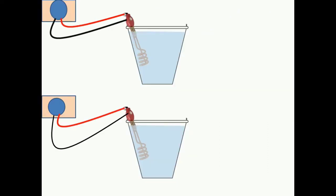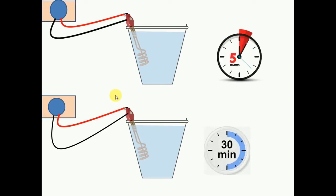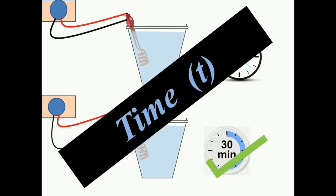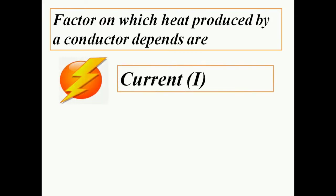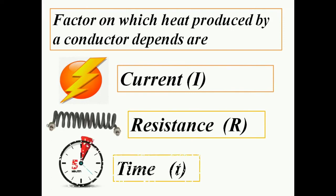In the third example, I have taken two similar heaters. The first is switched on for five minutes and the second for 30 minutes. The 30-minute heater will obviously produce more heat because it gets more time. So the third factor is time. Looking at all factors together: more current → more heat; more resistance → more heat; more time → more heat.